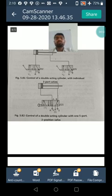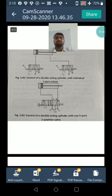Extension stroke of cylinder can be obtained by shifting valve VA to position one and air is admitted to the piston side. Since the rod side air is exhausted through VB position zero, the extension of piston is allowed.